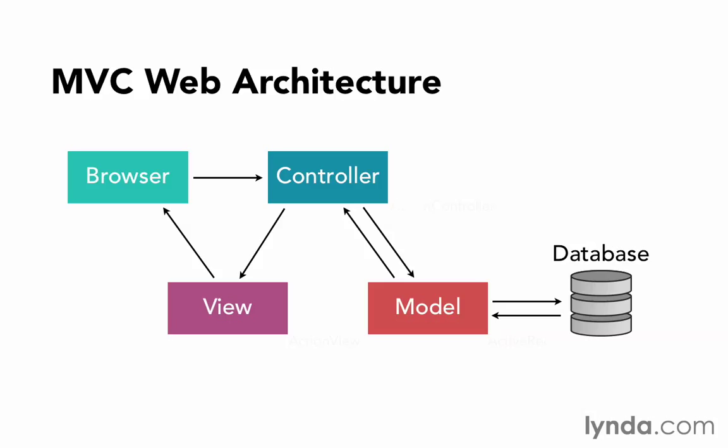It calls the controller Action Controller, and the view Action View, and the model is Active Record. Notice that that's Active Record, not Action Record, like the other two. Those names will become familiar as we work with Rails. We're going to be accessing parts of Active Record when we write code in a model. Rails also packages together Action Controller and Action View as Action Pack. So if you ever see the term Action Pack, it's just Action Controller and Action View grouped together as one thing. They're very closely related.